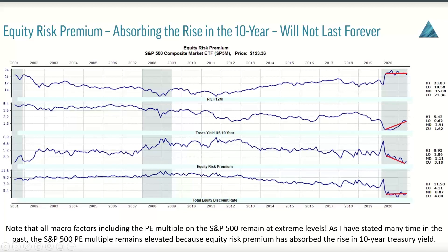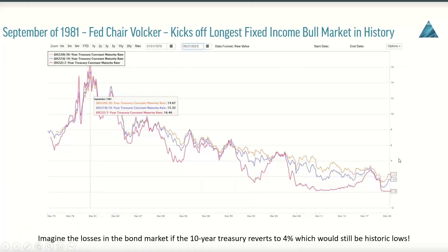I calculate equity risk premium every single week for Zacks — I've been doing the same calculation for over 25 years. What we need to watch for is that this phenomenon will not last forever. We're still at elevated levels of PE on the S&P 500 because equity risk premium continues to decline to offset the increase in the 10-year treasury.